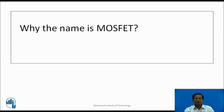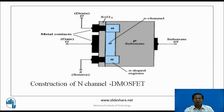Why is the name MOSFET — Metal Oxide Semiconductor Field Effect Transistor? M for metal: source, gate and drain are connected through metallic contact to the body. O for oxide layer: the gate is isolated from the channel by a thin layer of SiO2. By varying the gate potential, the conductivity of the channel changes, an electric field is developed across the channel, and that electric field controls the output power — that's why the name is metal oxide semiconductor field effect transistor.